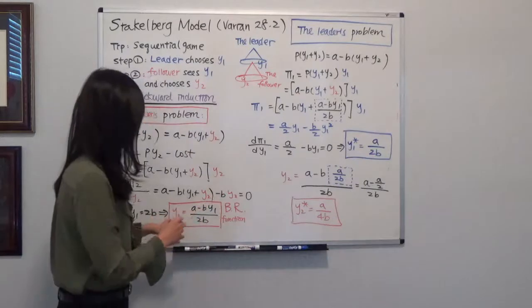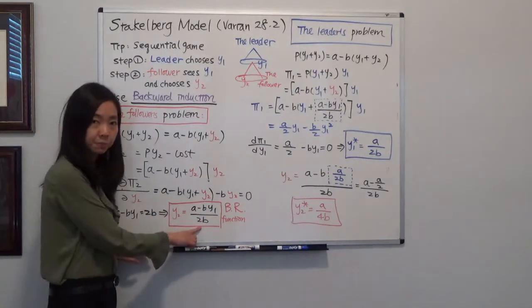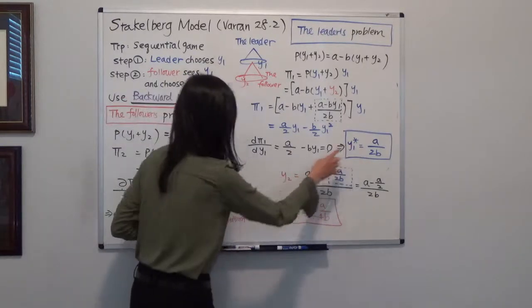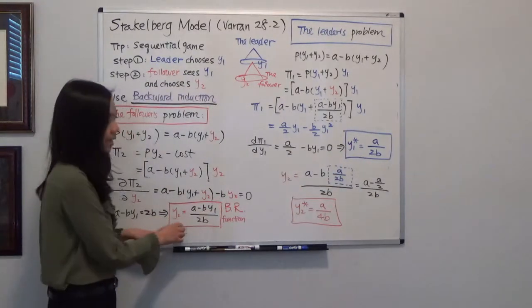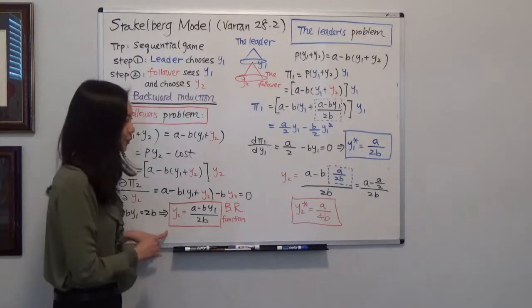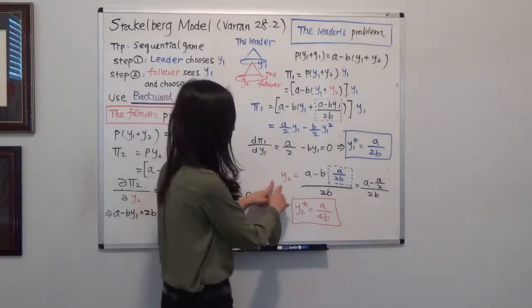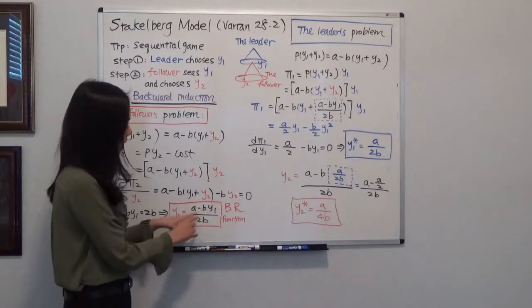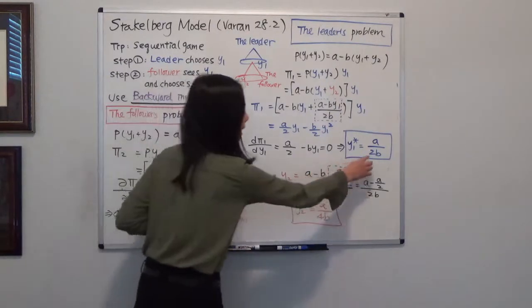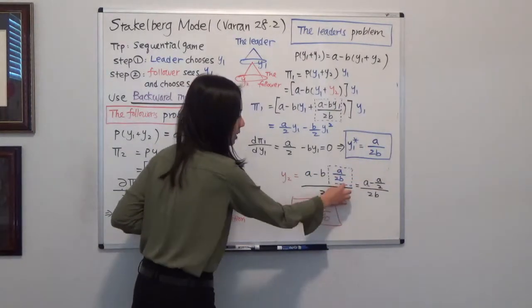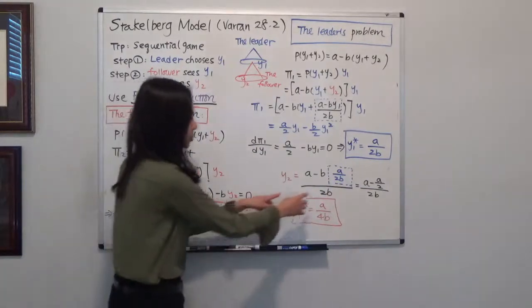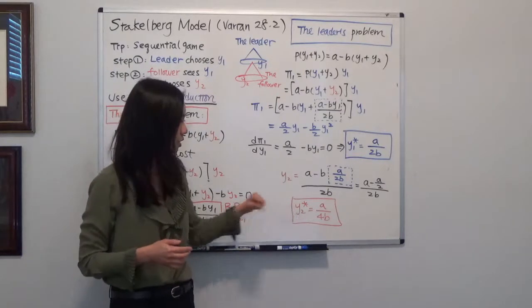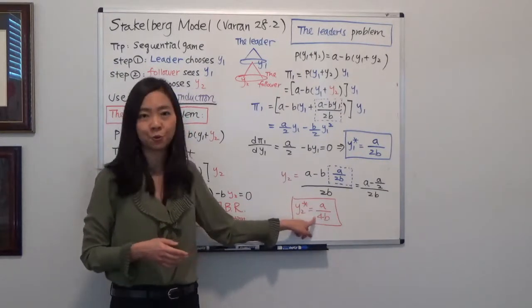Now firm two, it has the best response function. Firm two says that whatever you want to produce, I'm just going to plug it in and I know how much I want to produce. So here Y2 is equal to A minus B times Y1. And that's my Y1. I just plug it in. Divide it by 2B. So after some calculation, you'll find that Y2 star is equal to A divided by 4B.